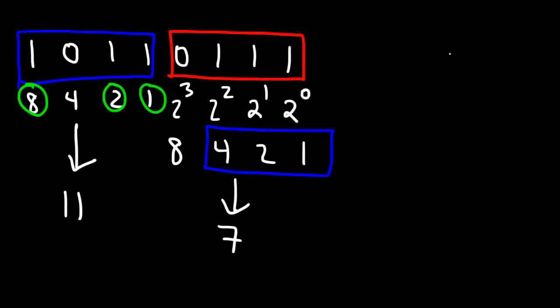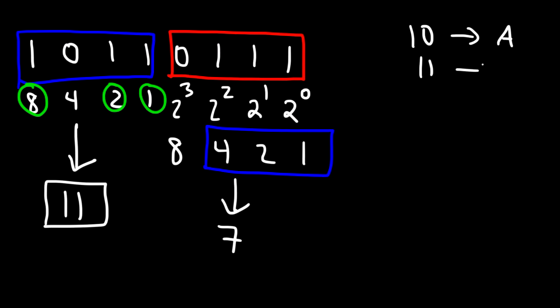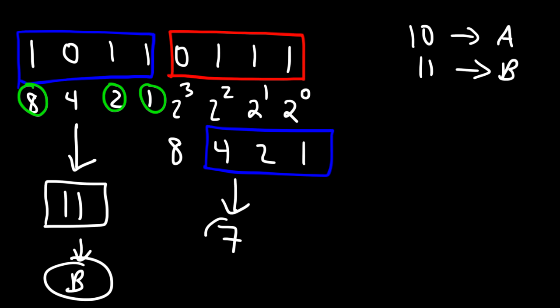Now we need to convert these numbers into the hexadecimal values. 10 corresponds to A and 11 corresponds to B. So we're going to replace 11 with B, and so we have B7.